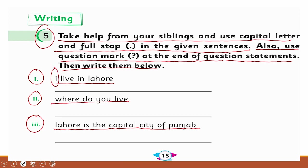The 'I' should be capital, 'Lahore' should be capital, and there must be a full stop at the end of the sentence. 'Where do you live?' — 'W' should be capital; it is a question so a question mark at the end. 'Lahore is the capital city of Punjab' — the letter 'L' for Lahore should be capital because it's the start of the sentence, and Punjab's 'P' should be capital.